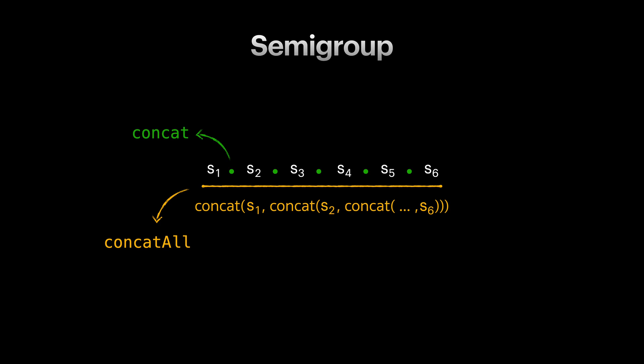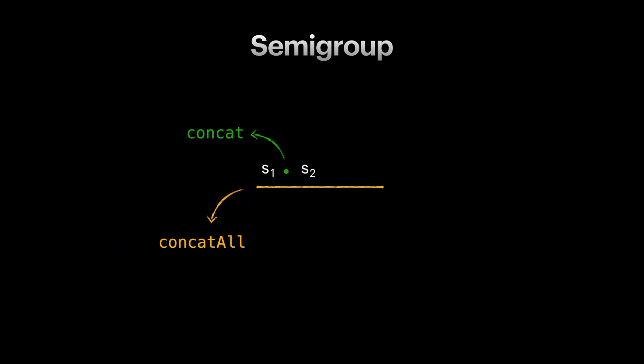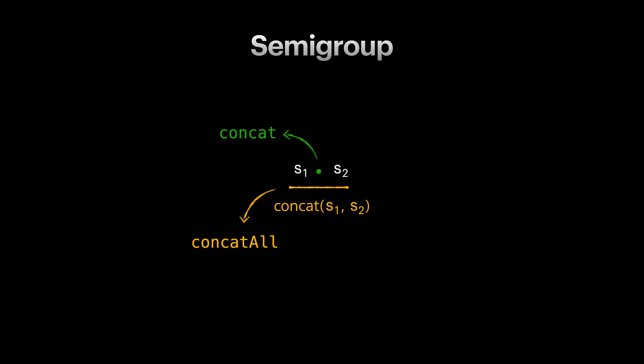That is good, but you may notice some edge cases here. What happens if we only have two elements in our list? Well, concat all can call concat on those two and return the result. What if our list has only one element? In that case concat all can return that element as the result.